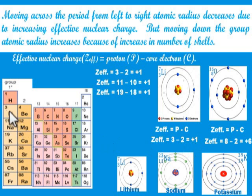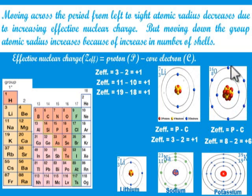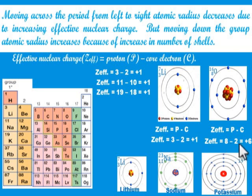Let's calculate for another atom in the same period. In period 2 we have lithium, beryllium, boron, carbon, nitrogen, and oxygen. Let's do it for oxygen. Oxygen has atomic number 8, so the number of protons is also 8. In its configuration, the first shell has 2 electrons and the second shell has the remaining 6 electrons. The effective nuclear charge of oxygen is: 8 (number of protons) minus 2 (core electrons) equals 6. You can see that the effective nuclear charge of oxygen is far higher than that of lithium, and that is why lithium has a higher atomic radius than oxygen — because as effective nuclear charge increases, atomic radius decreases.